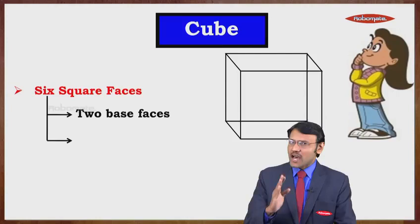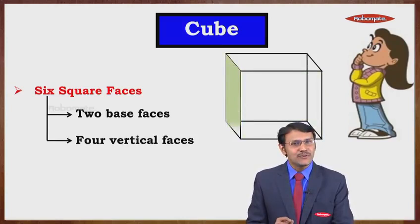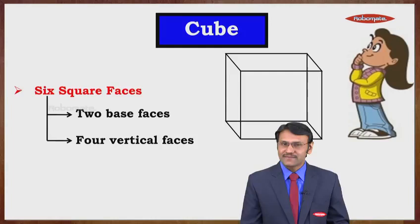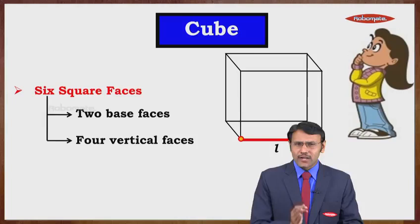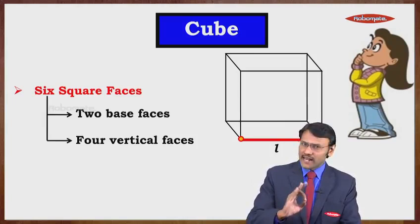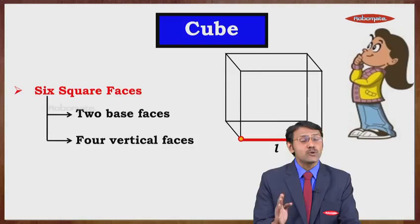A cube has two base faces and four vertical faces — that is one, two, three, and four. Now in a cube we have three dimensions: length, breadth, and height. Because a cube is made up of six square faces, their length, breadth, and height are all equal.